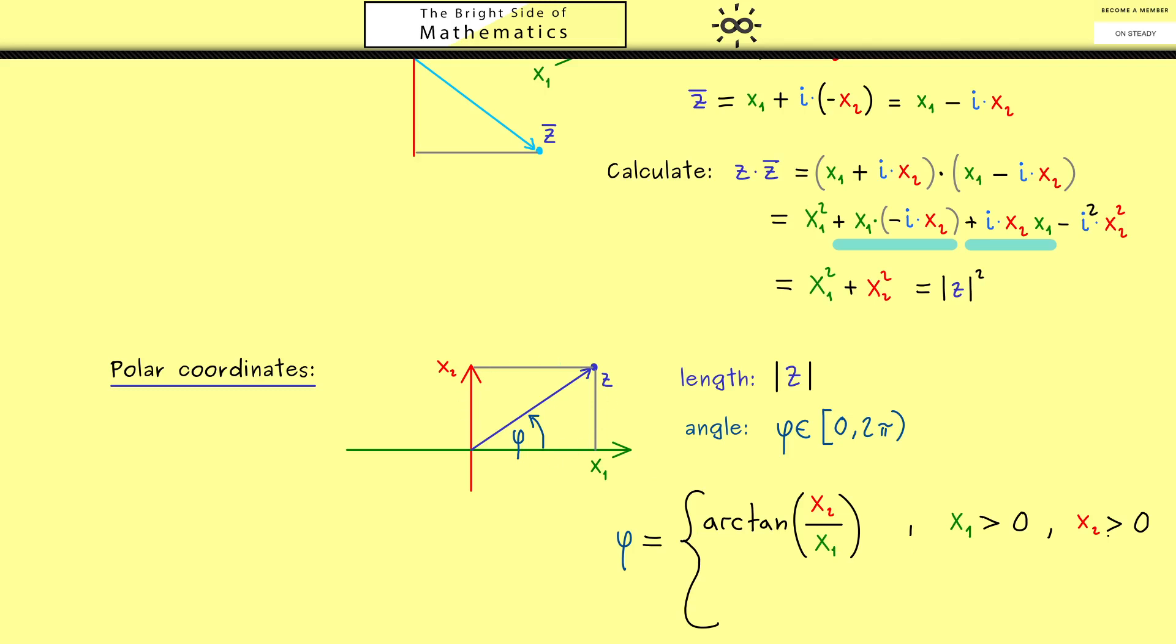However it's completely correct if x₁ and x₂ are greater than 0. Indeed it also works when x₂ is exactly 0. I don't want to spend time for the other cases here because it's not so important for understanding the whole topic here. But I put all the cases in the description in the pdf version of this video. Now one important thing I should tell you is that this angle φ is often called the argument of the complex number z.